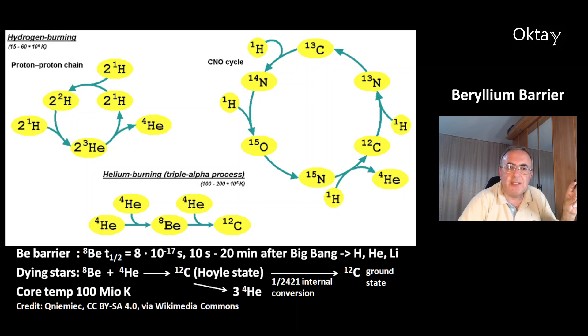And beryllium-8 can react with helium-4. Then you get carbon-12 in a Hoyle state. That's another bottleneck. Because most of the Hoyle state carbon-12 decay back to helium-4. Only one in 2421. The isotope goes to internal conversion. And then you get carbon-12 in ground state.